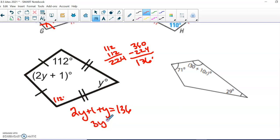Combine my like terms. I get 3y plus 1 equals 136. Subtract 1 from each side. I get 3y equals 135. 135 divided by 3. It looks like y is going to be 45.